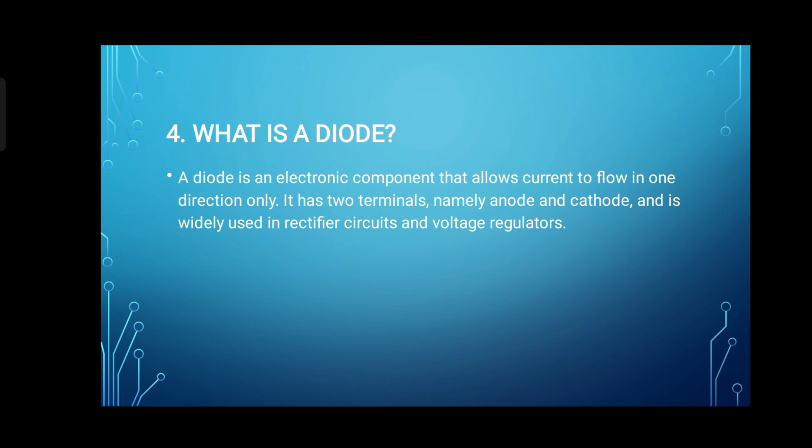4. What is a diode? A diode is an electronic component that allows current to flow in one direction only. It has two terminals, namely anode and cathode, and is widely used in rectifier circuits and voltage regulators.